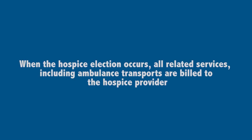A Medicare beneficiary in a terminal condition can elect this hospice benefit. Hospice services can be performed in a facility like a hospital or a skilled nursing facility, or in a private residence through a visiting nurse service. When this hospice election occurs, all hospice-related services, including ambulance transports, are billed to the hospice facility or the entity that is receiving the Medicare reimbursement.